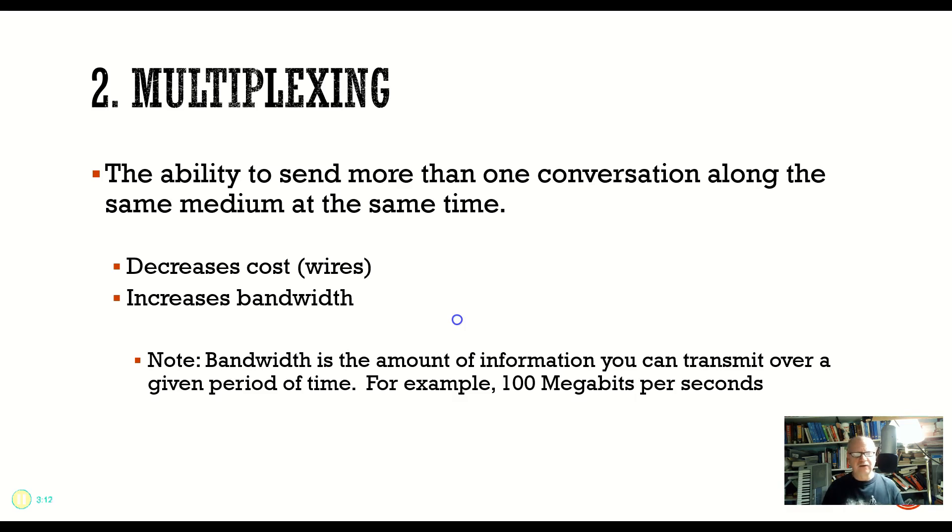This multiplexing does a couple of things for us. It decreases the cost, for one thing. If I can send lots of conversations over one wire, then I don't have to have a whole bunch of wires to send different conversations. And it increases bandwidth. By bandwidth we mean how much information can I send at a time. So by multiplexing I can get more information over one wire than I can if I only send one conversation.